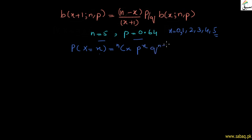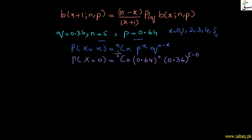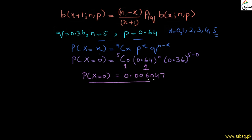We apply the binomial formula for P(X = 0). With n equal to 5 and x equal to 0, the combination C(5,0) equals 1, p to the power 0 equals 1, and q to the power 5 is computed. Using a calculator, P(X = 0) equals 0.006047.